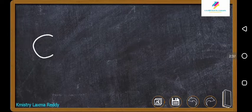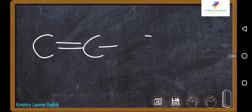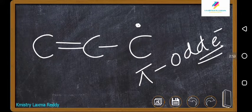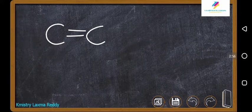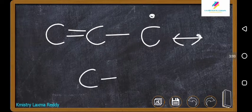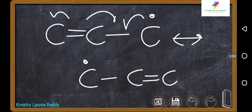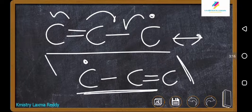Another example is the pi and odd electron system: C double bond C with one electron. Its resonance structure shows C and the odd electron shifted — the one electron comes here, forming a bond, and the other carbon now carries the odd electron. Both structures are similar so both are equally stable. This type is called pi bond and odd electron system.